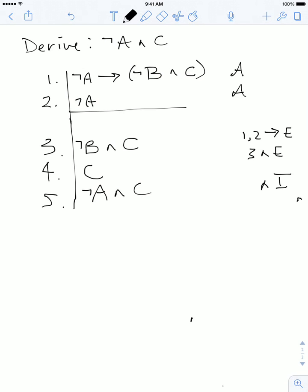And line five comes from lines two and four by conjunction introduction. That's how you can work backwards and forwards to complete a simple derivation.